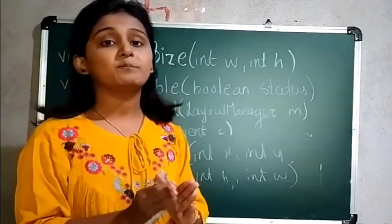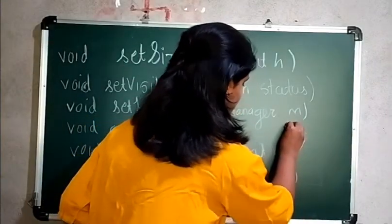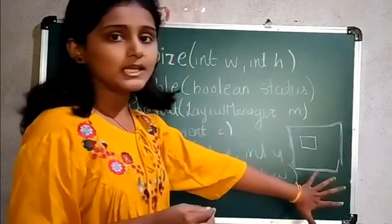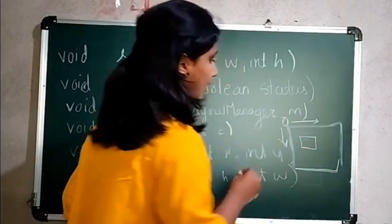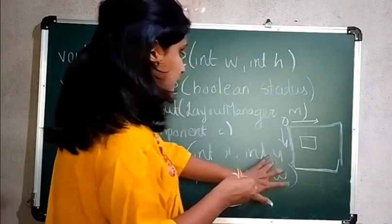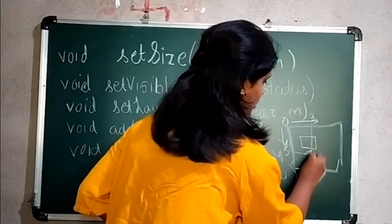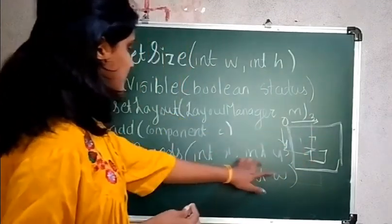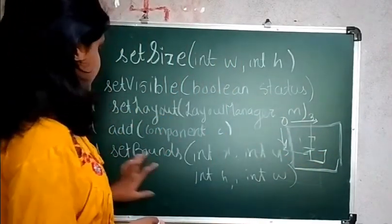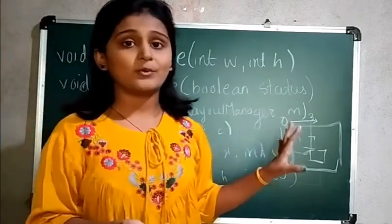setBounds sets the bounds of a component. The x and y parameters position the component on the output screen. Suppose you want a component at a particular position — x and y specify that position. If you pass x=30 and y=50, the component will be placed at that position. Height and width define the size of that particular component. So these are the methods we are going to use in the program.